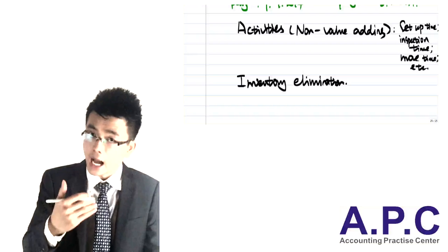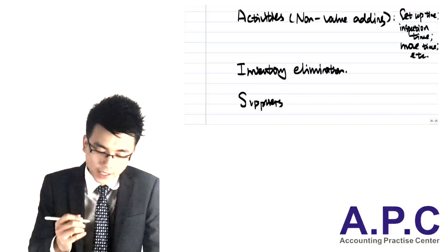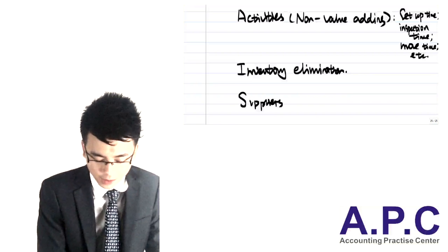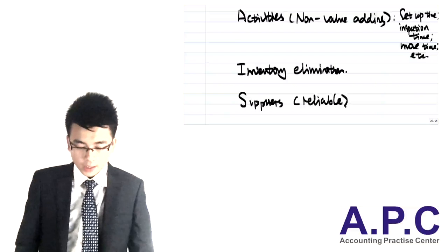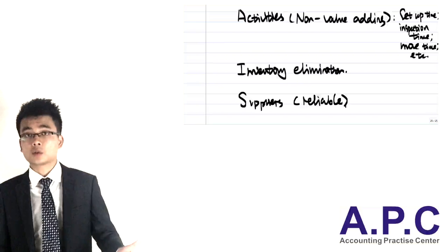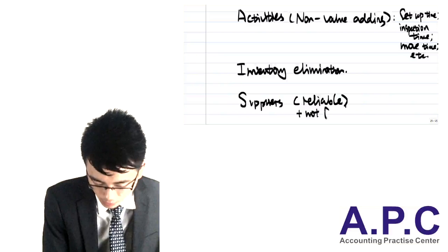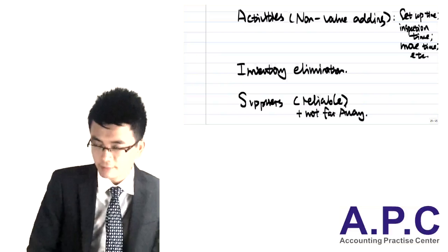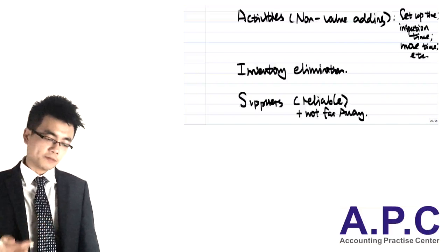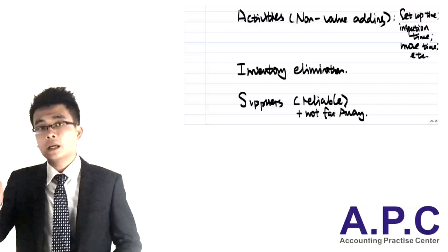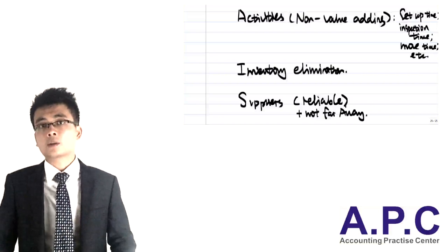S stands for suppliers. You need to make sure the supplier is reliable and the quality is reliable, otherwise the customer will return goods and it will damage your reputation. Also, the supplier should not be far away — if the supplier is overseas, how can you use the JIT system? Some famous companies using JIT have suppliers within 100 miles of their factory, which saves a lot of cost and allows raw materials to be purchased and manufactured very quickly.